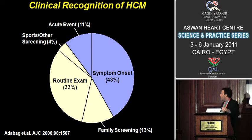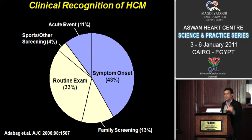How do patients come to clinical attention? The most common reason is symptom onset: heart failure symptoms, shortness of breath, chest pain. But also, the second most common reason is the routine examination — murmur, abnormal electrocardiogram — still important in the detection of this disease in the outpatient setting.